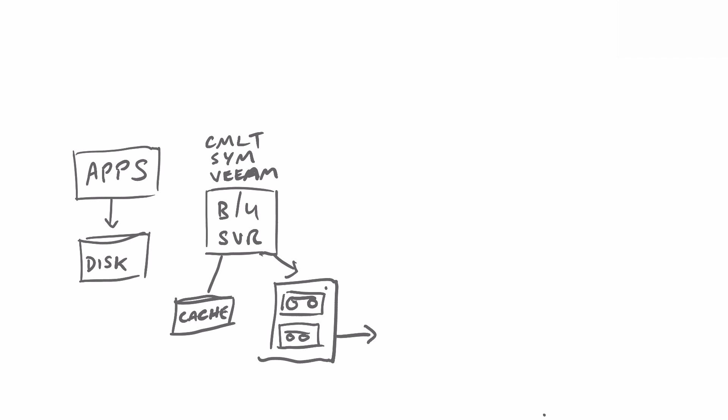So a truck comes along, picks up the tapes and drives away. You may never see them again and you don't know whether your data would even be recoverable. We all know this pain. So what does NetApp AltaVault do and how does it modernize a tape backup infrastructure?